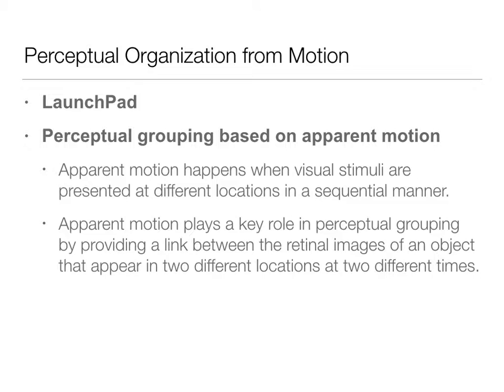Apparent motion is when visual stimuli are presented at different locations in a sequential manner. In the case of the flip books, it was done very rapidly by flipping through those pages. Apparent motion really plays a key role in how we group information. It's an important link to see how retinal images of an object that appear in two different locations — or in the case of flip books, many different locations at different times — really give that perception of motion.